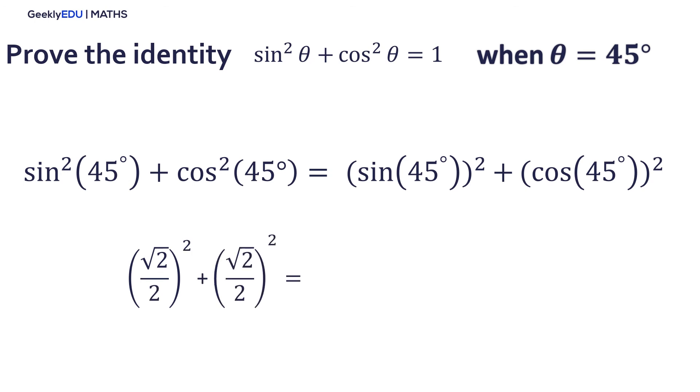And again, some algebra using the power rules. And we obtain 2 divided by 4 plus 2 divided by 4 equal to 4 divided by 4 and that is equal to 1. And that's how we prove that the identity is true.